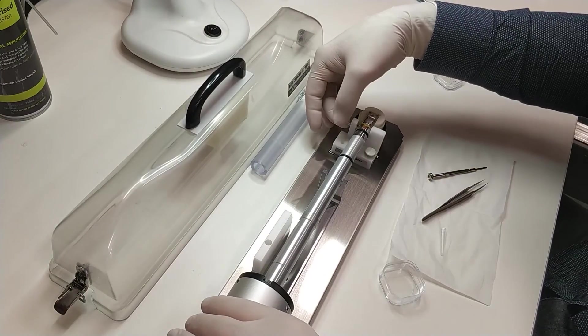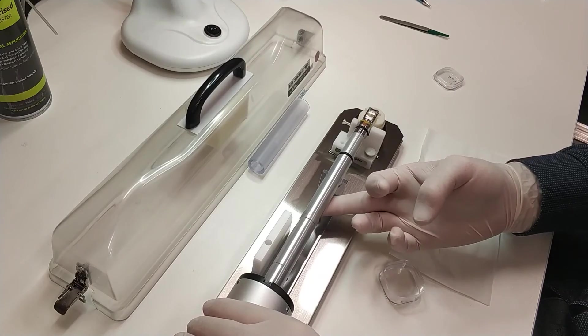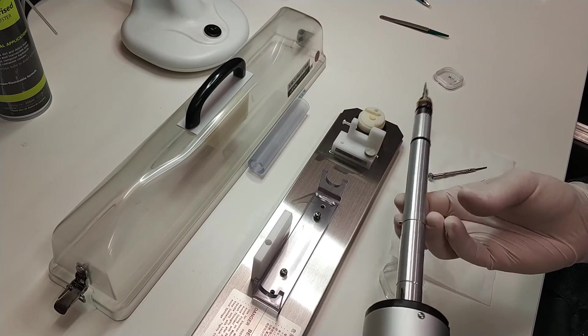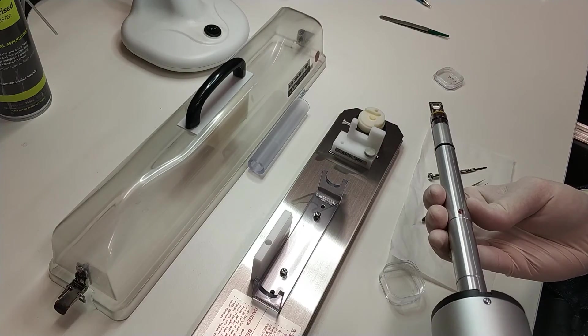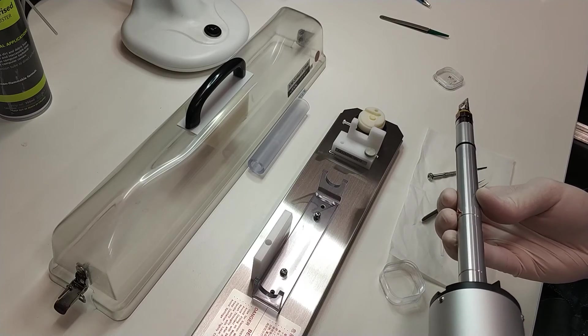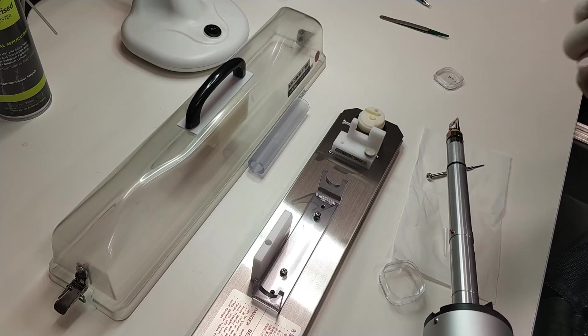To check everything is secure, take the holder out of the cradle. Loosen the clamp first, then lift the tip out of the cradle. A quick test involves inverting the holder. If everything is done right, nothing falls out.